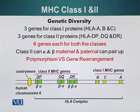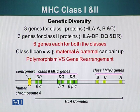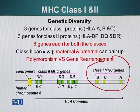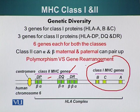However, MHC proteins do not follow the same strategy as B cells and T cells. There are three genes for MHC Class I molecules — A, B, and C — and three for MHC Class II molecules — DP, DQ, and DR. These genes are present on human chromosome number six and are also called HLA genes, or human leukocyte antigen genes, which is another name for MHC genes.